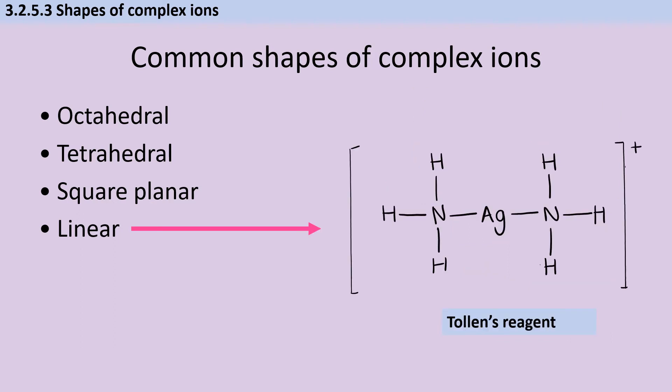The final shape you need to know for complex ions is linear, and a good example is Tollens reagent, which you encountered as a test for aldehydes.